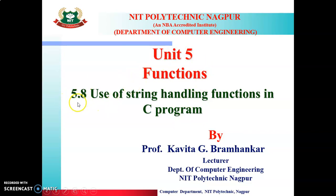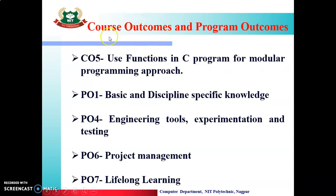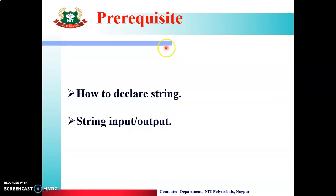Today's topic is Topic No. 5.8 of Unit 5. Topic name is Use of String Handling Functions in C Program. Learning Outcomes: After watching this video, you will be able to use different String Handling Functions in C Program. Course Outcomes mapped by this unit is CO5, that is Use Functions in C Program for Modular Programming Approach. Program Outcomes satisfied by this video are PO1 Basic and Discipline Specific Knowledge, PO4 Engineering Tools Experimentation and Testing, PO6 Project Management, PO7 Lifelong Learning. Pre-requisite to this topic is you should know how to declare strings and how to take input and output of the strings.